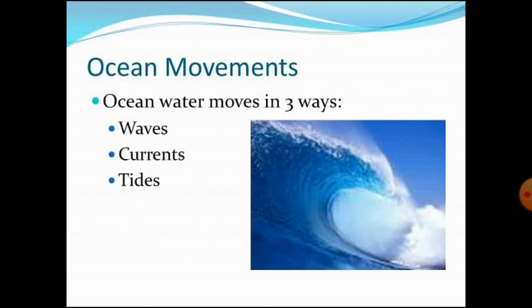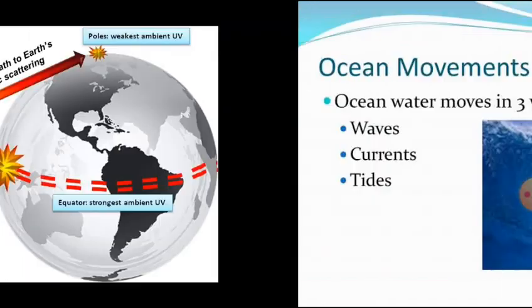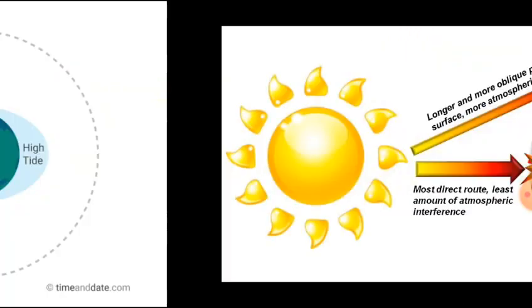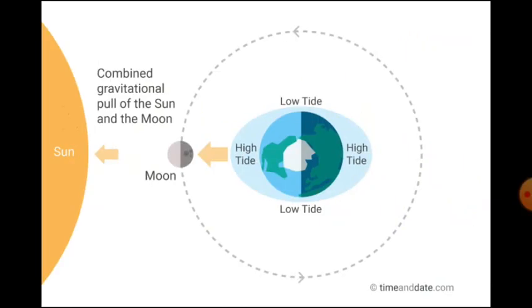Waves are influenced by the action of wind on the surface of the ocean. Currents are influenced by the heat from the sun on the equator and cooler poles. Tides are caused by gravitational forces from the moon and the sun. So this was about the chief movements of ocean water.